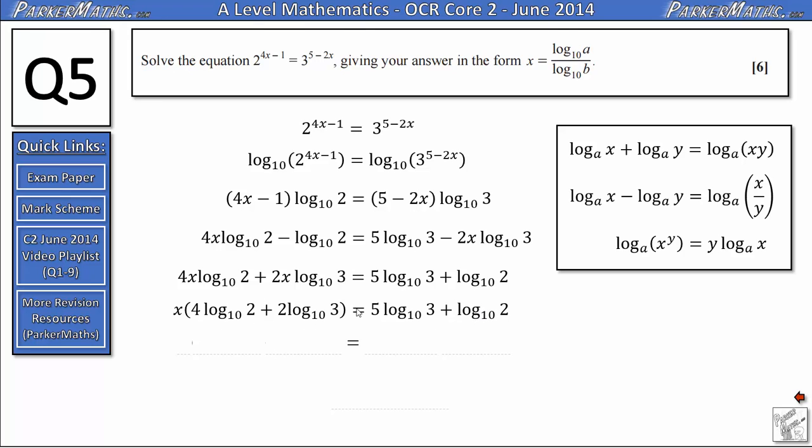And then next, so that I'm able to combine these logs, I'm going to bring the coefficient back inside the log. I'm going to use the power law backwards. If we know that y log x is the same as log x to the power y, I can make this first log here log 2 to the power of 4. And that's going to just be 16. So I'll leave my x on the outside. The first log will become log 16. 2 log 3 can be rewritten as log 3 squared, which is log 9.